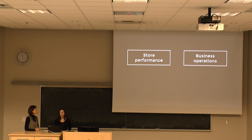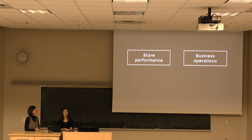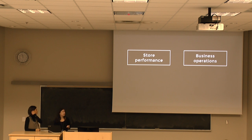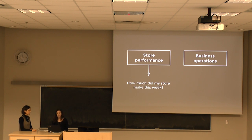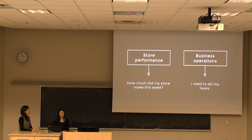The key finding from our mapping exercise was that there were two overarching tasks that would determine how our information was organized. We discovered that our merchants are almost always either trying to understand how their store is performing — for example, 'how much did my store make this week?' — or they're trying to conduct a business operation, for example, 'I need to do my taxes.'